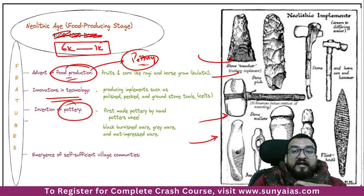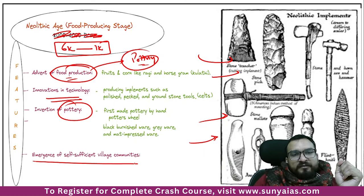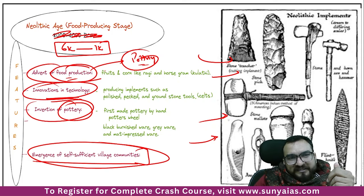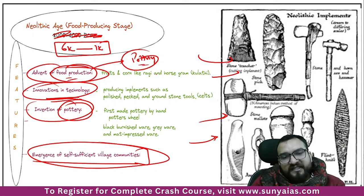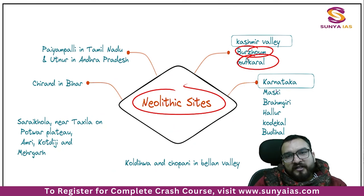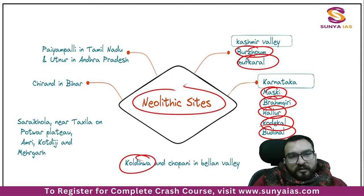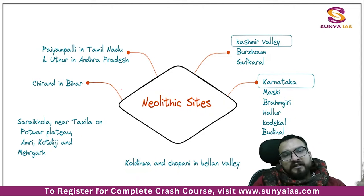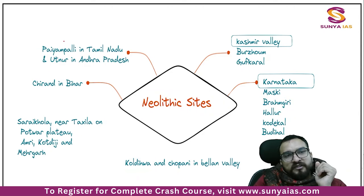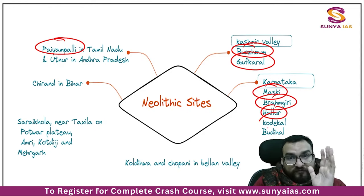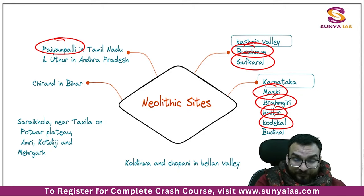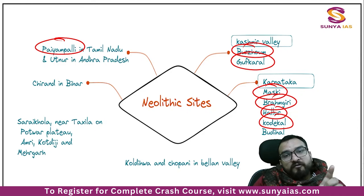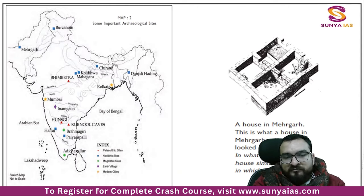A lot of students dwell upon details of these tools and feel they are becoming knowledgeable — but not in a UPSC-oriented way. Questions will never come from silly topics because everyone will know them. Neolithic age features: food production increased, pottery making emerged, technology improved — polished stone tools were made. The emergence of self-sufficient village communities you will see here. Neolithic sites: Burzahom, Gufkral, Maski, Brahmagiri, Hallur, Kodegal, Budhihal, Paiyampalli, Chirand in Bihar, and Koldihwa.